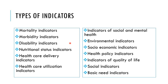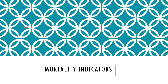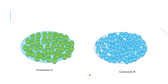In today's lecture we will only discuss mortality indicators in detail; subsequent lectures will cover the other indicators. These indicators are very important from an examination point of view — you must memorize their formulas and know their significance and how they affect the health status of a community. The mortality indicator measures death in our community.